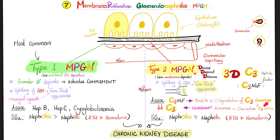C3 convertase converts C3 into C3a and C3b. Go watch my complement cascade video. When you activate the complement, you get more injury — not to bacteria, but to your own kidney. This complement activation is harmful. How does the doctor know the complement is active? You have consumed your complement proteins, leading to decreased C3 complement protein in the blood.